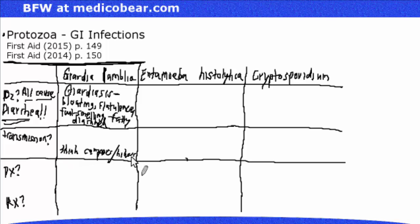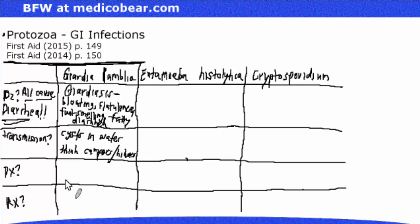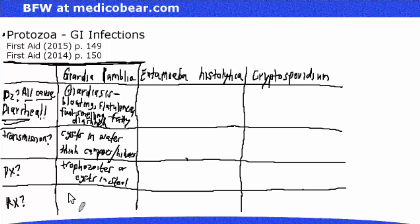Remember that Giardia lamblia is the most common enteric parasite — enteric meaning occurring in the intestines — in the U.S. and Canada. Examiners love to ask questions about this. Transmission is by cysts in water. Diagnosis is by looking at the stool, specifically for trophozoites or cysts. Treatment is metronidazole.